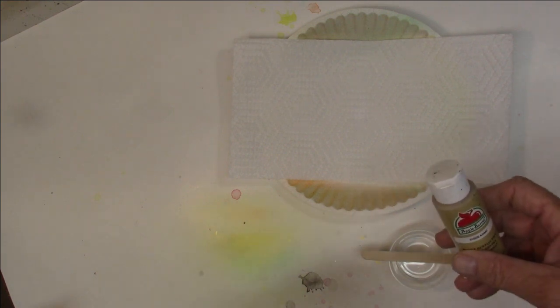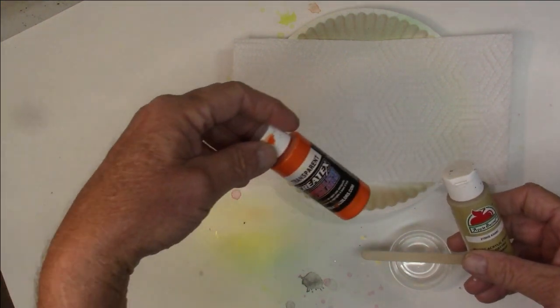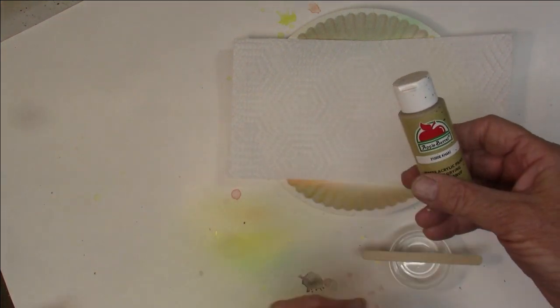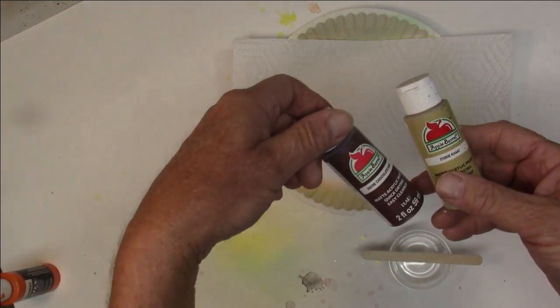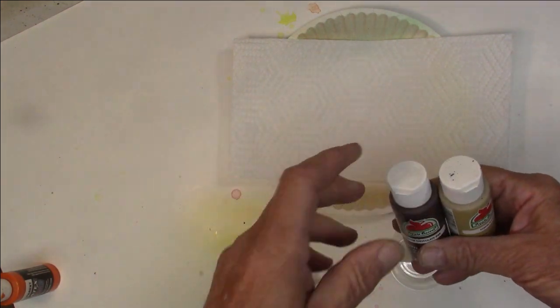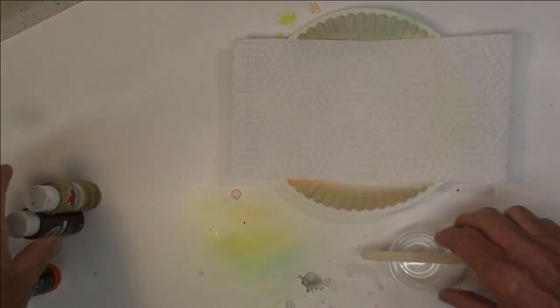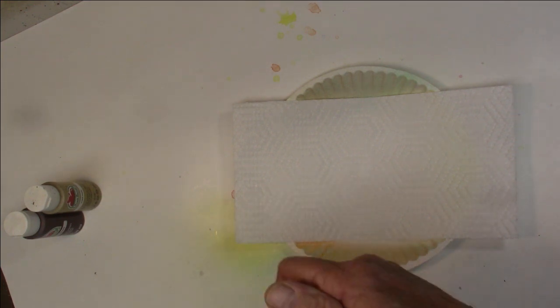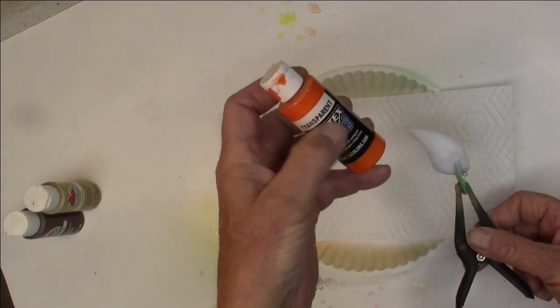Alright, today for this lure we're going to mix up some different styles of paint. We're going to use the Createx transparent, but we're also going to use these Walmart Apple Barrel brands. These have to be thinned down quite a bit. Sometimes they can give you trouble because they have bigger pigment flakes and cause plug-up problems. We'll hope we don't have that, but we're going to try two different styles of paint today.